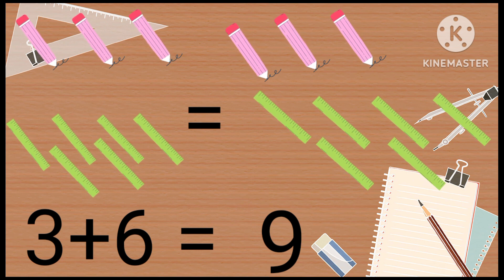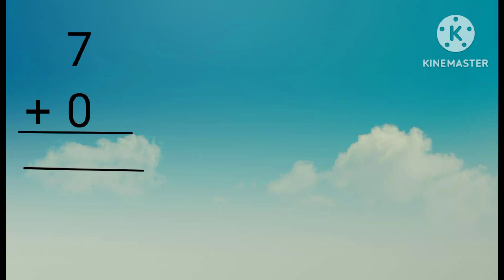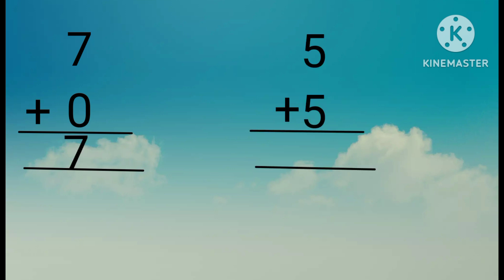Now let's do more. Seven plus zero equals seven. Five plus five equals ten.